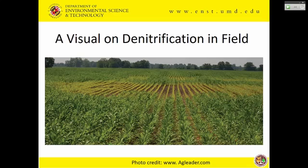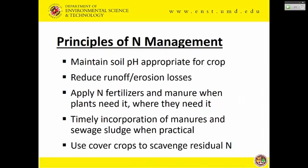This has a huge influence on productivity. When looking at crop production systems, we don't want denitrification — we want nitrate to stay in the soil so plants can use it. But in aquatic systems, we actually want denitrification to happen to get rid of excess nitrogen in the water body. In recent years, work has been done on increasing denitrification in water systems. Key nitrogen management considerations include pH, runoff and erosion losses, applying nutrients when plants need them, timely incorporation, and using cover crops to store residual nitrogen so subsequent crops can utilize it.